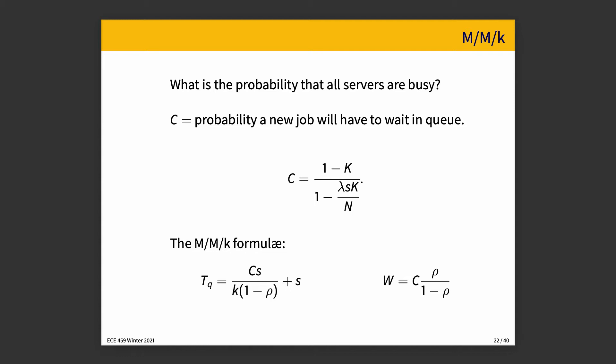So what is the probability that all servers are busy? But now when we have multiple servers, we can calculate C, the probability that a new job will have to wait in the queue. And C is 1 minus K over 1 minus lambda SK divided by N. So does this formula work? Sure, it does what we need. It tells us that if we have N servers, is it more likely that we will have to wait in the queue? No, in fact, it will be less likely that we have to wait in the queue if we have a lot of servers.